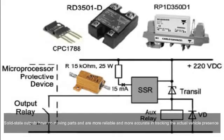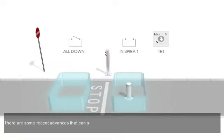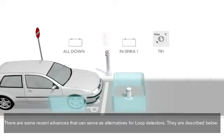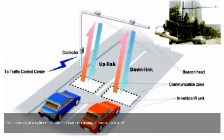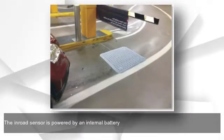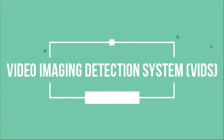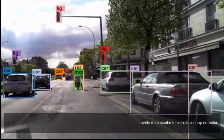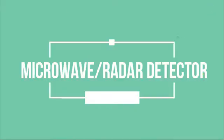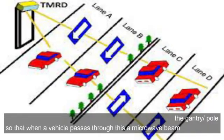What are the alternatives to inductive loop detectors? Recent advances provide several alternatives. The self-powered vehicle detector (SPVD) consists of a cylindrical road sensor containing a transducer and a radio frequency emitter with antennas and a battery; the in-road sensor is powered by an internal battery and connected to a relay by a radio link. The video imaging detection system (VIDS) contains a single video camera with processing hardware and software to provide data similar to a multiple loop detector. In microwave/radar detectors, a microwave sensor is mounted onto a gantry or pole so that when a vehicle passes, a microwave beam is projected towards the vehicle and the reflected microwave is used to classify vehicles.